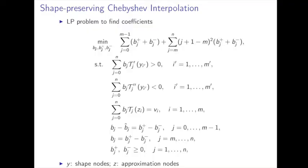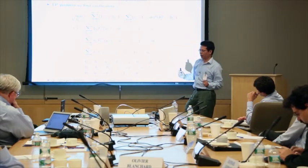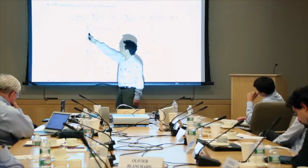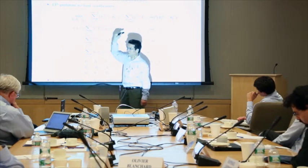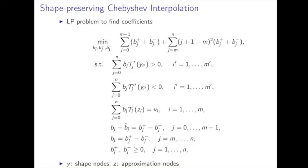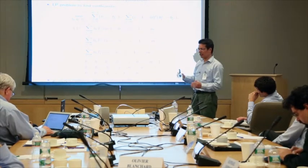Now let's talk about shape preservation — how to deal with it for polynomial approximation. We add some constraints at shape nodes, which could be the same as or different from the approximation nodes. We say the approximation function's first derivative should be positive and the second derivative should be negative — meaning monotone and concave at these shape nodes. It cannot guarantee shape preservation at every point, but this partial shape preservation is often good enough.